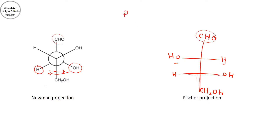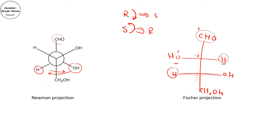Now I need to identify R and S. R is when the priority order of groups goes clockwise, and S is when it goes anticlockwise. If the hydrogen is on the side of the structure, I have to convert R into S and S into R. For this chiral center, the priority goes: hydroxyl first, then aldehyde, then the center carbon as third priority. I am going clockwise, so it is R — and since hydrogen is on the side, I flip it to S.